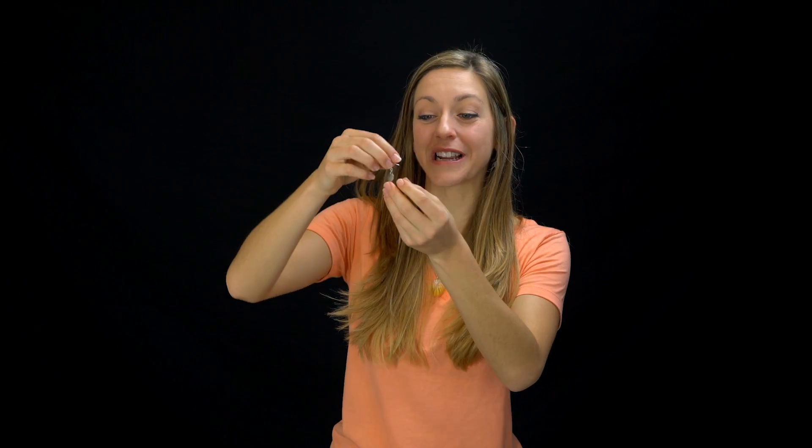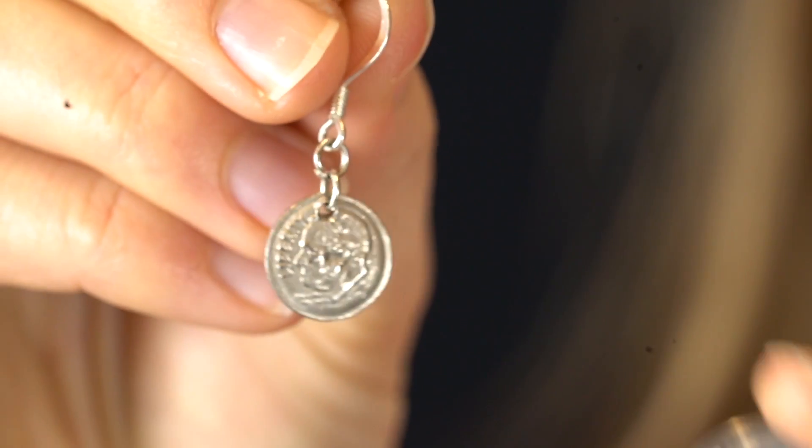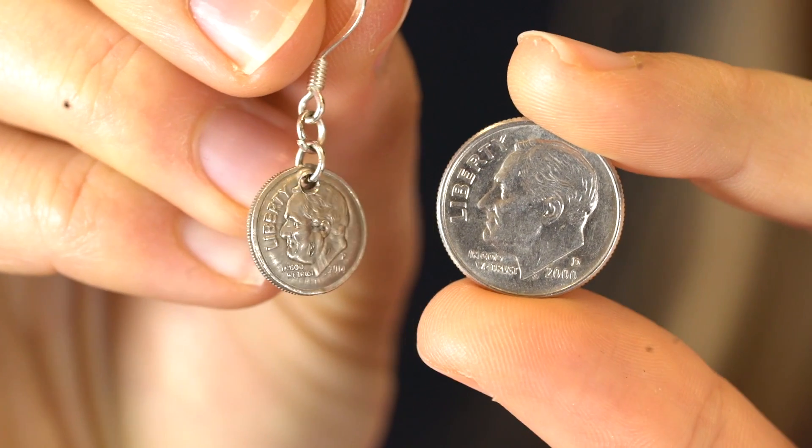Induction was also used to create the earrings that I'm wearing, which are shrunken dimes. We used a giant electromagnet to shrink coins. I made a video explaining how that works, so check it out. Why the electricity doesn't like to turn off? That's an interesting question. And I find it really intuitively difficult to understand.